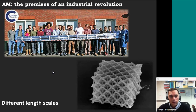The other interesting thing about additive manufacturing is the fact that you can bridge different length scales. You can see here the example coming from the University of Cranfield, where researchers hacked the use of arc welding to do some 3D printing of large-scale metal structures.